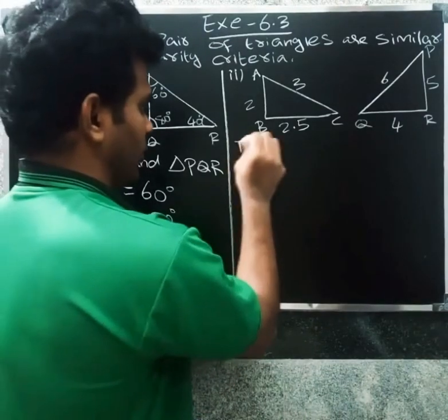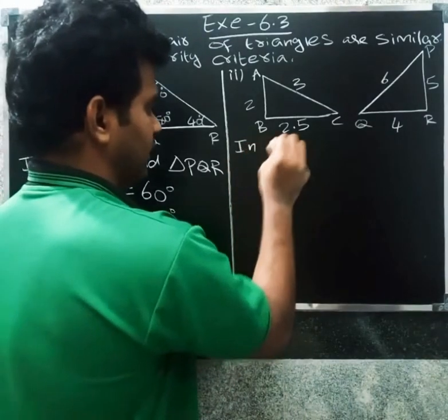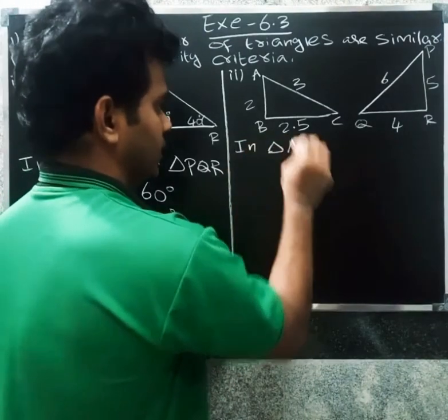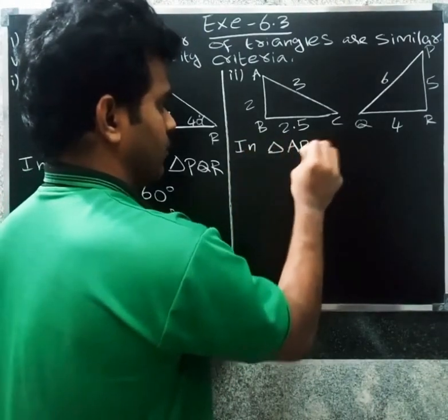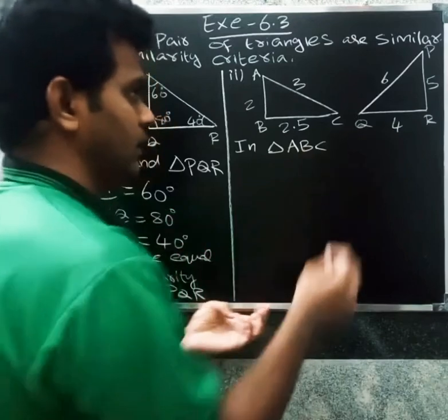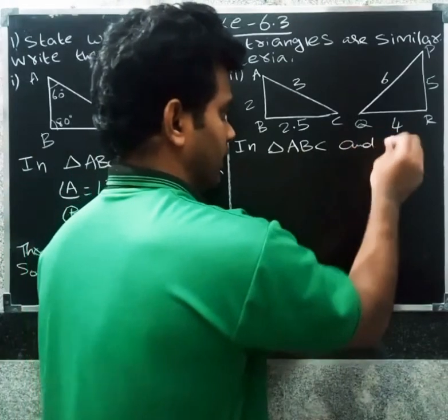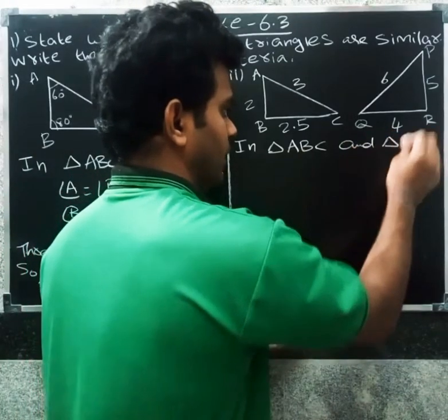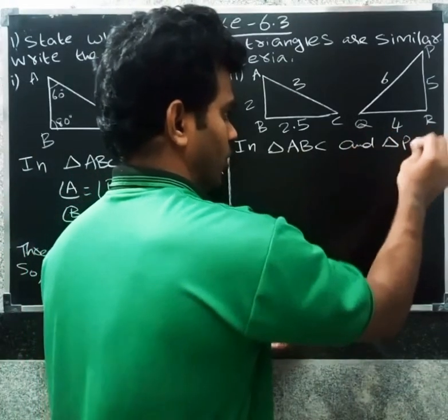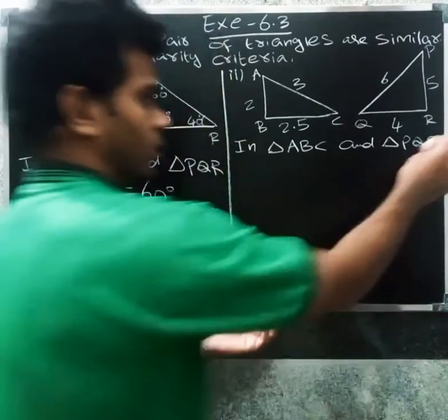Next, second triangle: triangle ABC and triangle PQR again.